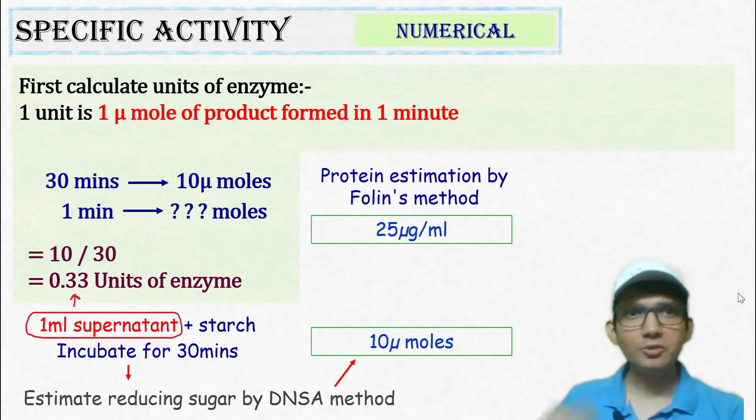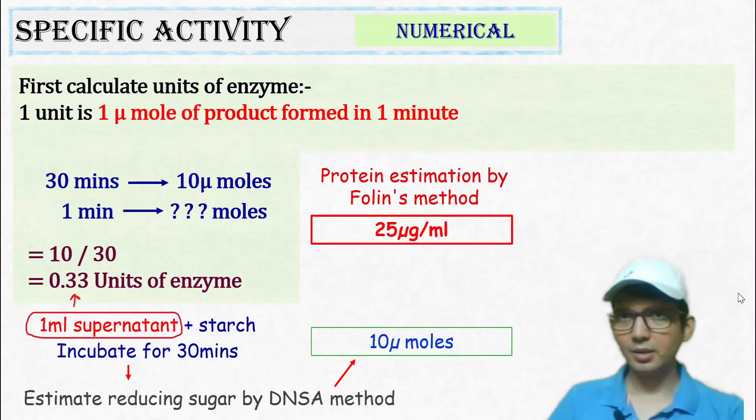Now, since 1 ml of sample was used for the assay, we can say 1 ml of supernatant has 0.33 units of enzyme. Now, protein estimation using 1 ml of sample shows the presence of 25 micrograms of protein.